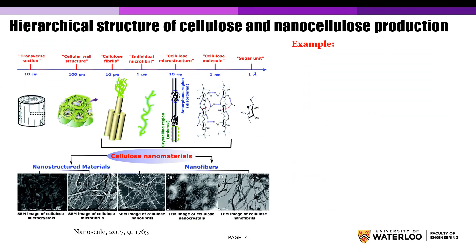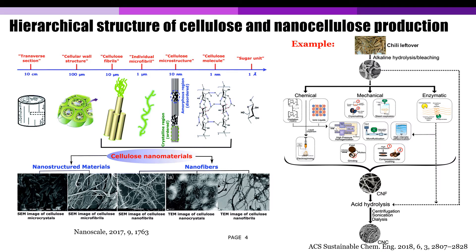As one of the major components existing in plant cell walls, cellulose fiber is built up by repeated glucose units as shown in the hierarchical diagram. Typically, it can be isolated from biomass by chemical, mechanical, or enzymatic treatment. To produce cellulose nanomaterials like cellulose nanofibrils and cellulose nanocrystals, acid hydrolysis is further required to break down the structure.